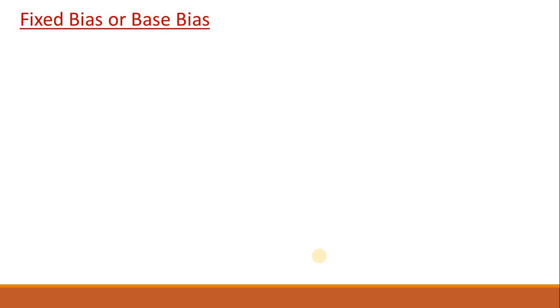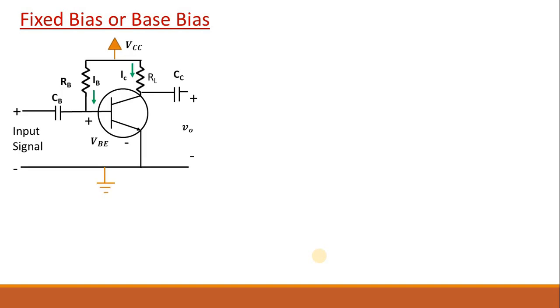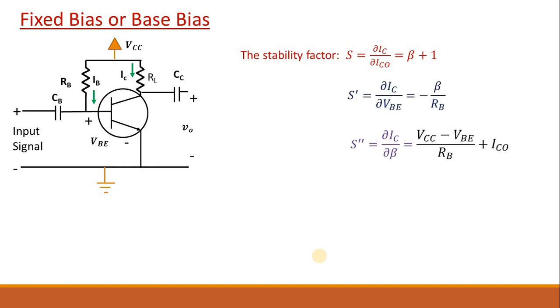To stabilize the operating point we have different types of strategy, different types of biasing using which we can improve the stability of operating point. I have discussed fixed bias network and there we have seen that if we evaluate the stability factors, S, S prime and S double prime, which says how IC will change with respect to reverse saturation current, VBE that is voltage across base emitter junction, and beta.